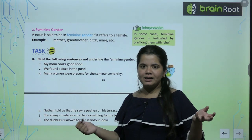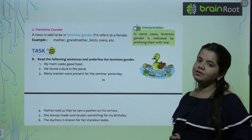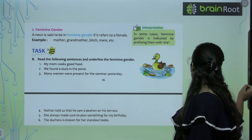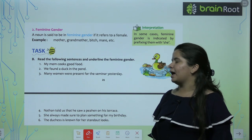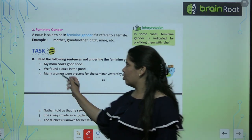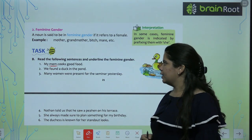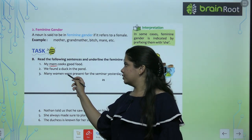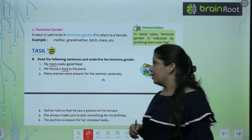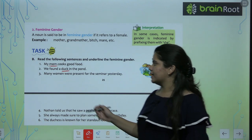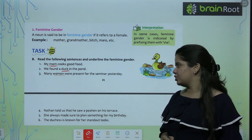Now we have a task. Following sentences have been given and we have to underline feminine gender — hamei feminine gender ko underline karna hai, jo kisi female ko represent karra. My mother or my mom cooks good food — mom will be your feminine gender. We found a duck in the pond — duck will be your feminine gender. Many women were present for the seminar yesterday — women will be your feminine gender.